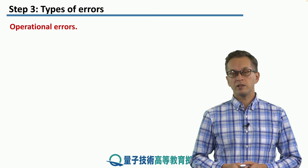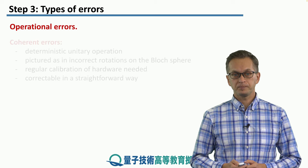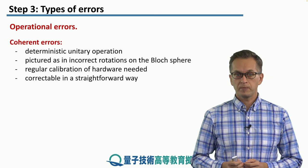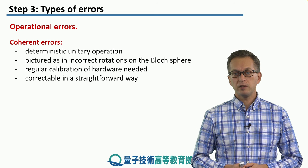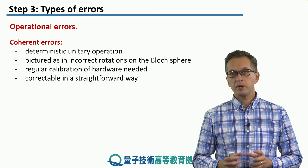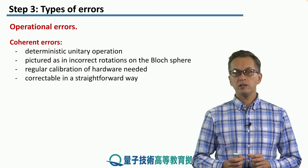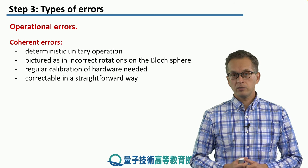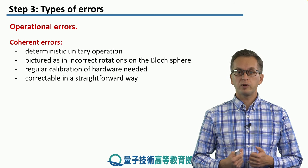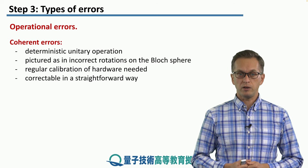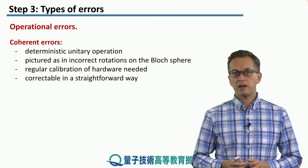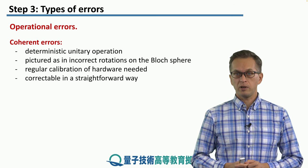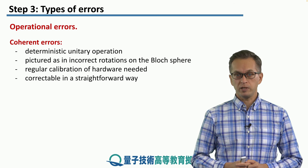So let's dive into the operational errors. Operational errors can be, for example, coherent — these are deterministic unitary operations, and they can be pictured as incorrect rotations on the Bloch sphere. In order to determine these errors, we have to perform regular calibration of the hardware. In principle, these errors are correctable — once you know what your coherent error is, you can always compensate for it.